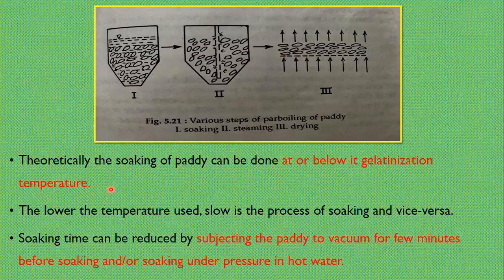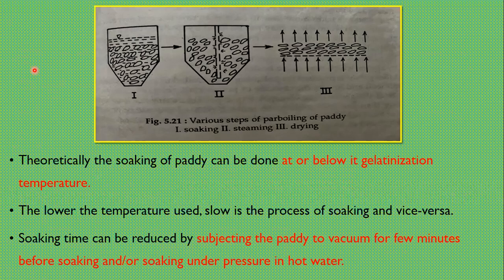Theoretically, the soaking of paddy can be done at or below its gelatinization temperature, that is, the maximum temperature of soaking should be below 70 degrees Celsius. The lower the temperature used, the slower the process of soaking, and vice versa. Soaking time can be reduced by subjecting the paddy to steam for a few minutes before soaking, or by soaking under pressure in hot water.